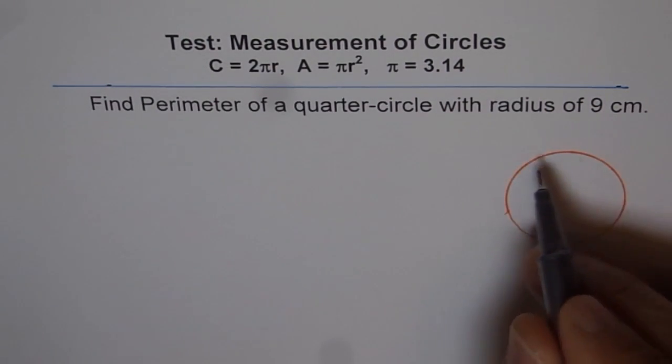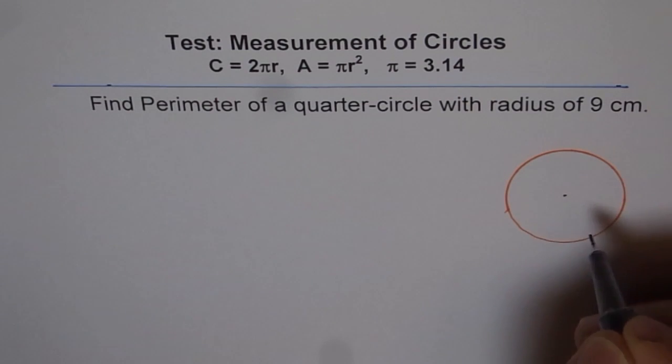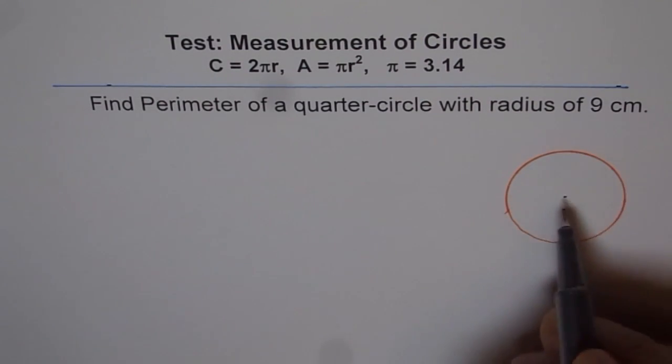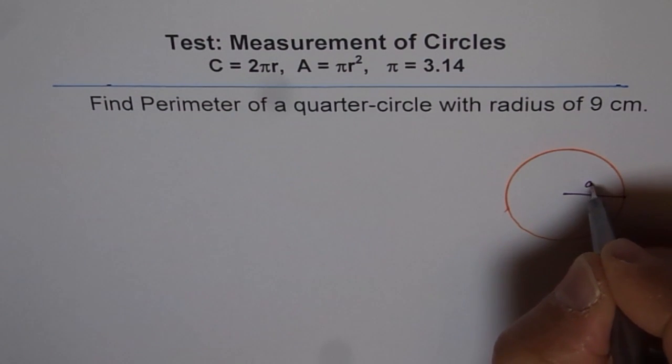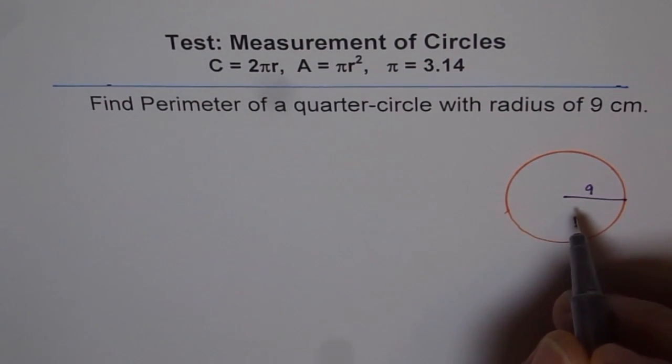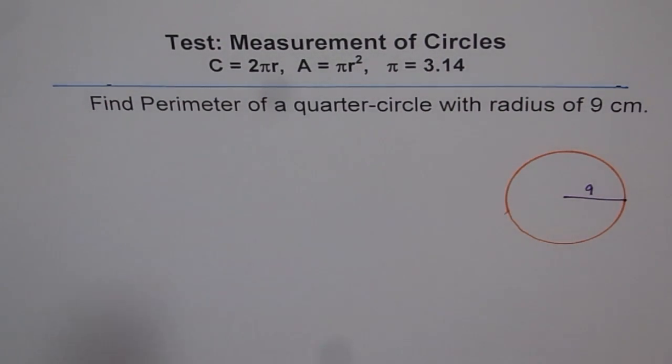So I have shown you a circle here and imagine that the radius of this circle is 9 cm. That is, let us say, distance from here to here is 9 cm. In that case, find perimeter of a quarter circle.